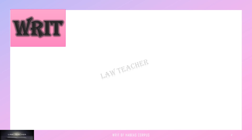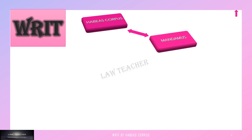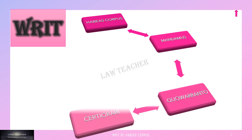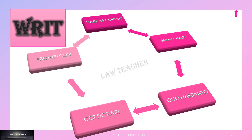Now we can start with our topic habeas corpus. Before that, understand the fact that the five writs — namely habeas corpus, mandamus, covarendo, certiorari, and prohibition — all five of them are Latin terms. Already we have understood that writ means a kind of remedy.